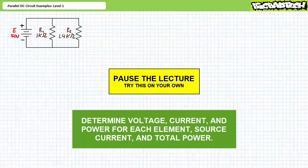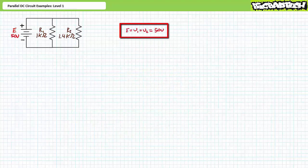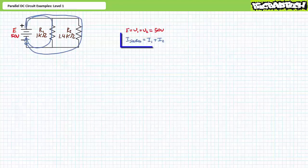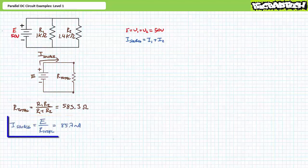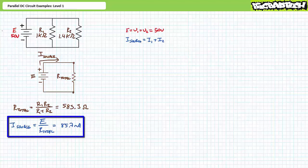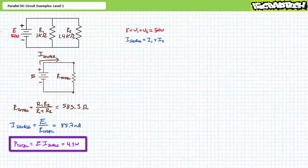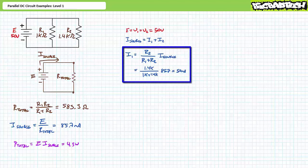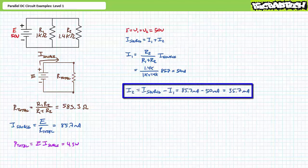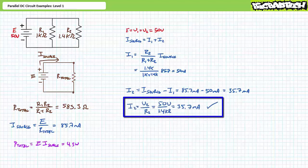Let's approach this analysis differently. Voltage across elements in parallel is the same: E equals V1 equals V2, all equal 50 volts. Source current equals I1 plus I2. Combining in parallel yields a total resistance of roughly 583.3 ohms. Source current equals supply voltage divided by total resistance; substituting yields 85.7 milliamps. Total power equals supply voltage times source current, yielding 4.3 watts. We can now use the current divider rule: I1 equals 50 milliamps, and by KCL, I2 is the remaining 35.7 milliamps, confirmed by Ohm's law.